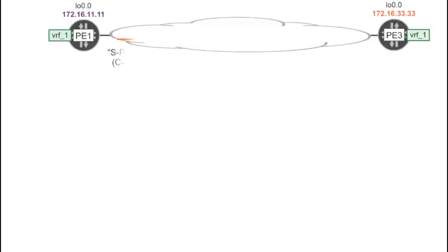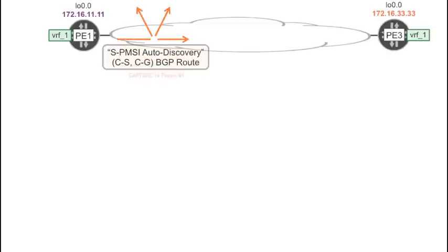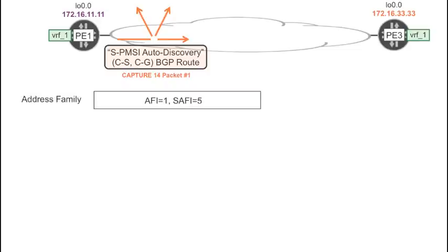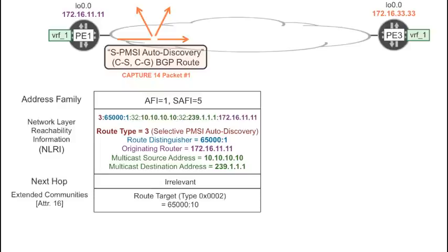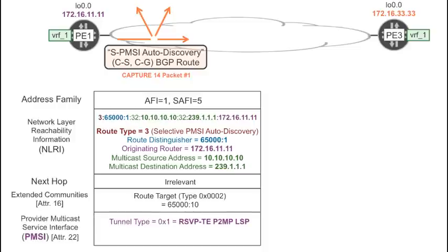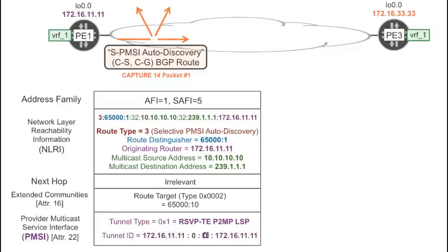Let's see the details of that route exchange. These are multicast VPN routes, so they are encoded in AFI1 SAFI5. The selective PMSI auto-discovery route has Type 3. This route carries the full mesh route target, so it is imported by all the remote PEs in the multicast VPN. The route also has a PMSI attribute with a new label number, which will be included in the RSVP path messages of the new P-tunnel that is about to be signaled.